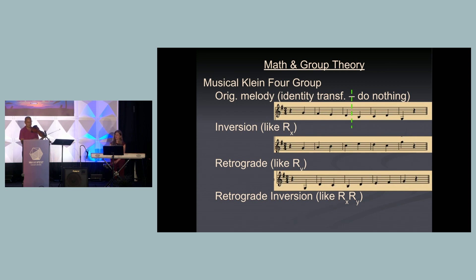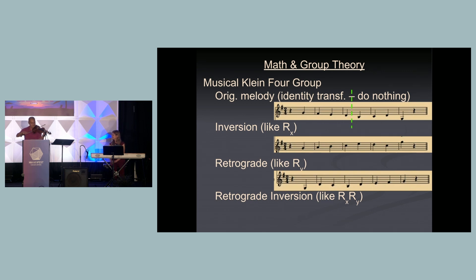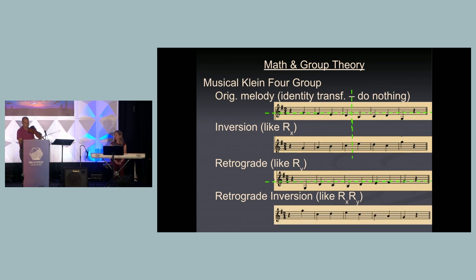Then we have retrograde, which is basically like flipping about the y-axis — it's a backwards version of the original. We could also combine retrograde inversion, so both flipping about the x-axis and y-axis at the same time.